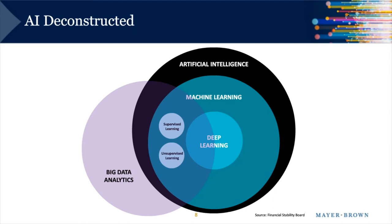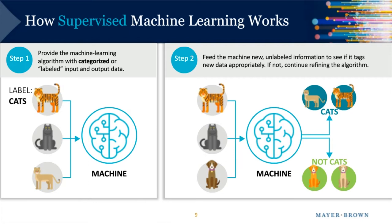Supervised machine learning starts with programming an algorithm or machine with certain categories or labels, then feeding data into the machine so that it begins to recognize and group similar items. In our example, the machine is taught to distinguish cats from dogs. The intent is to get the machine to recognize patterns and correlations from the data and begin to label what it is processing. Supervised machine learning involves pre-programming an algorithm to discover certain correlations and patterns in the data.